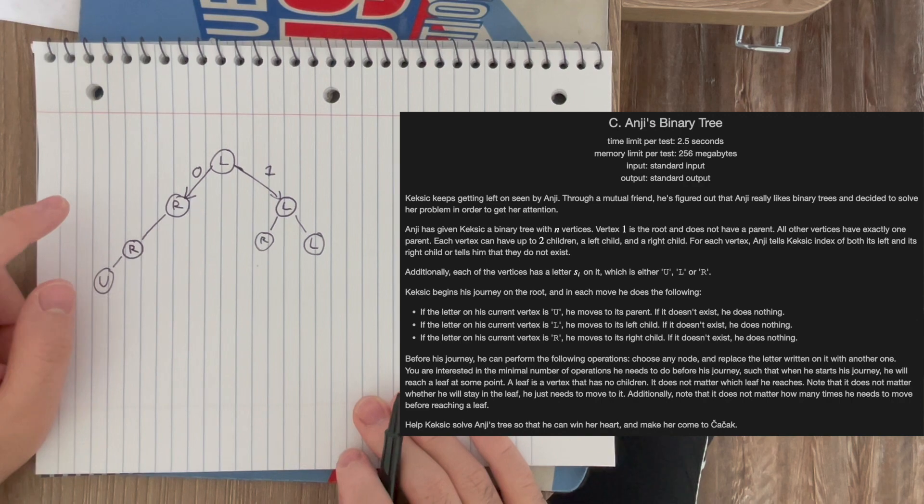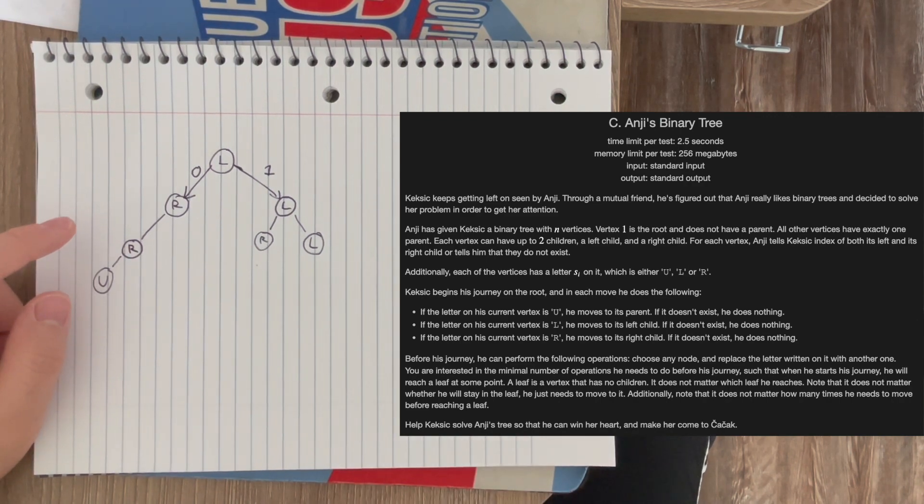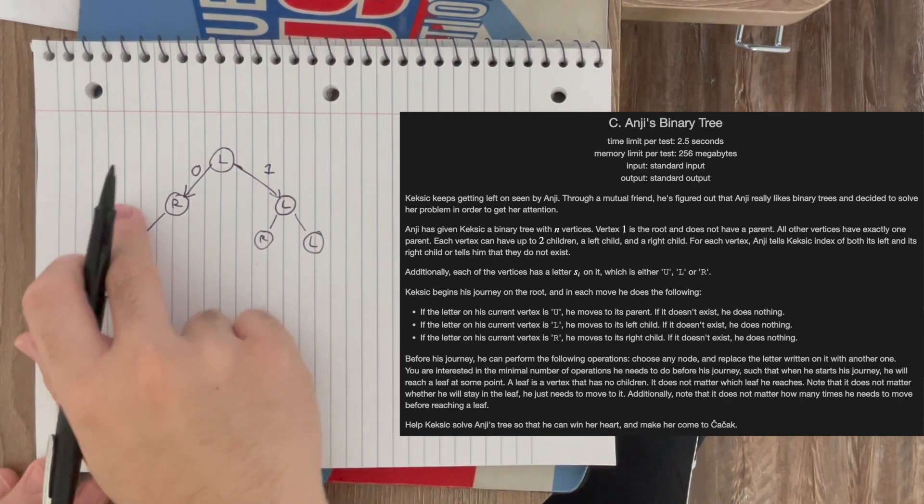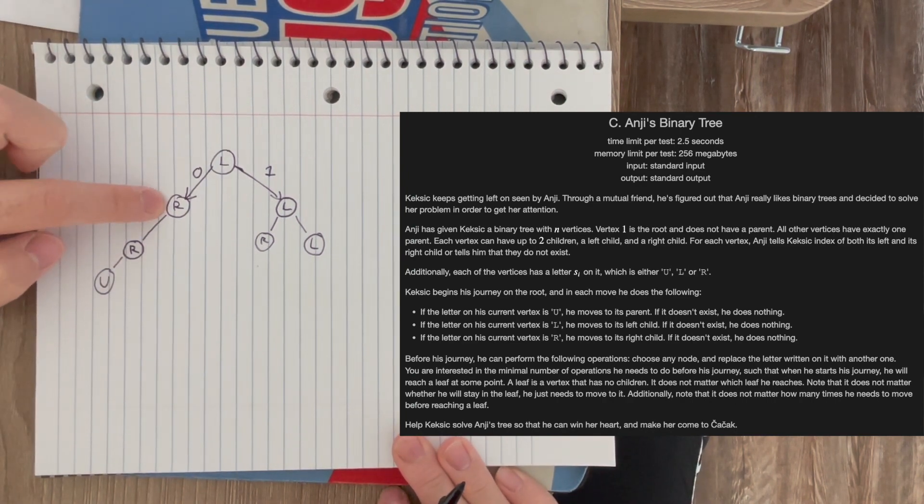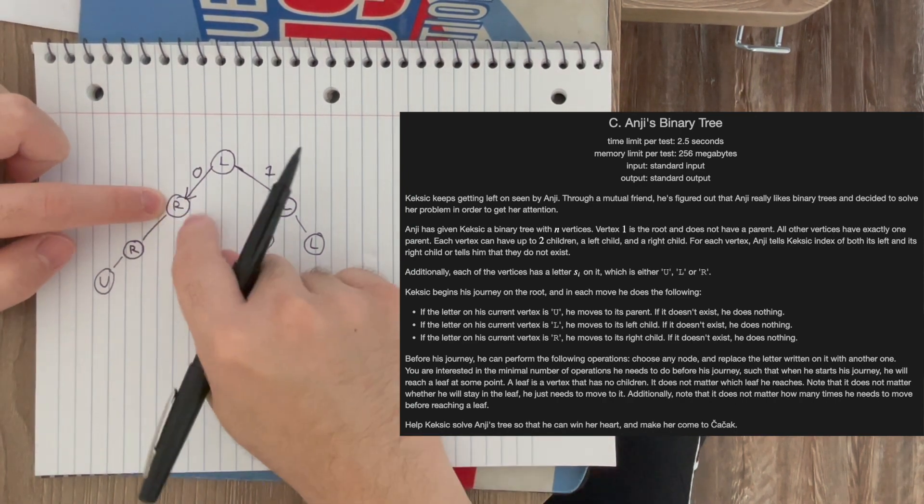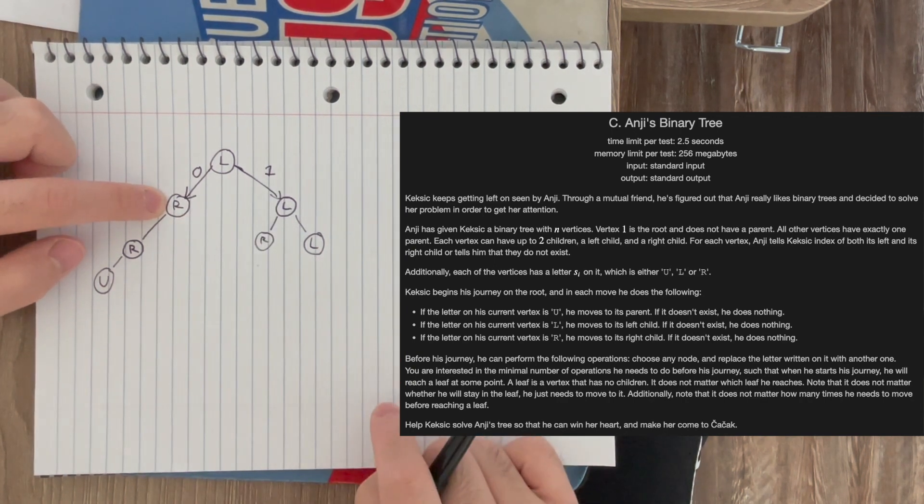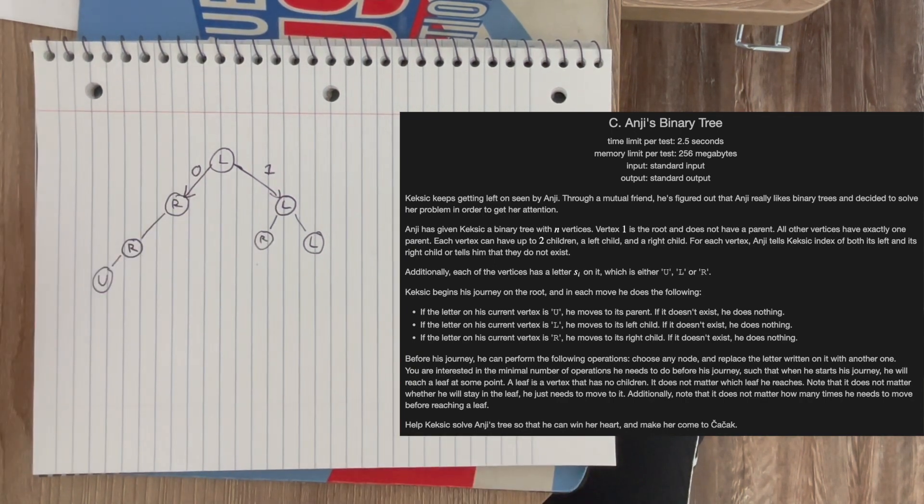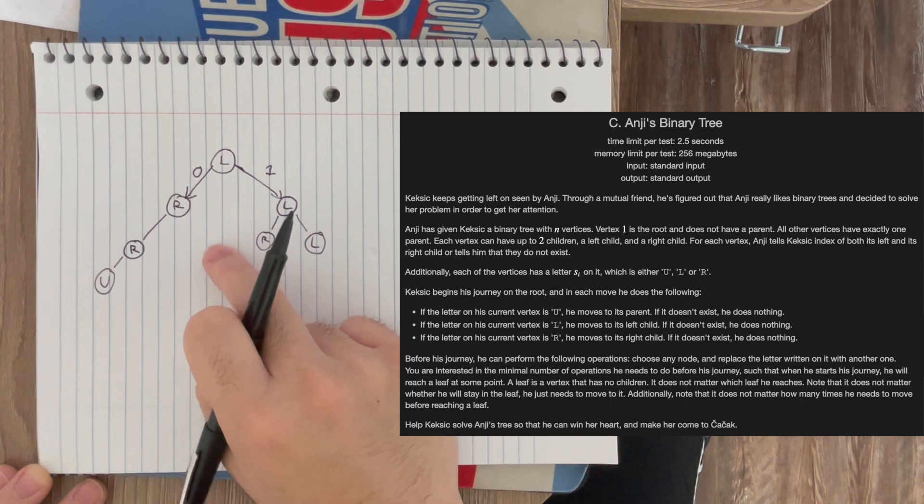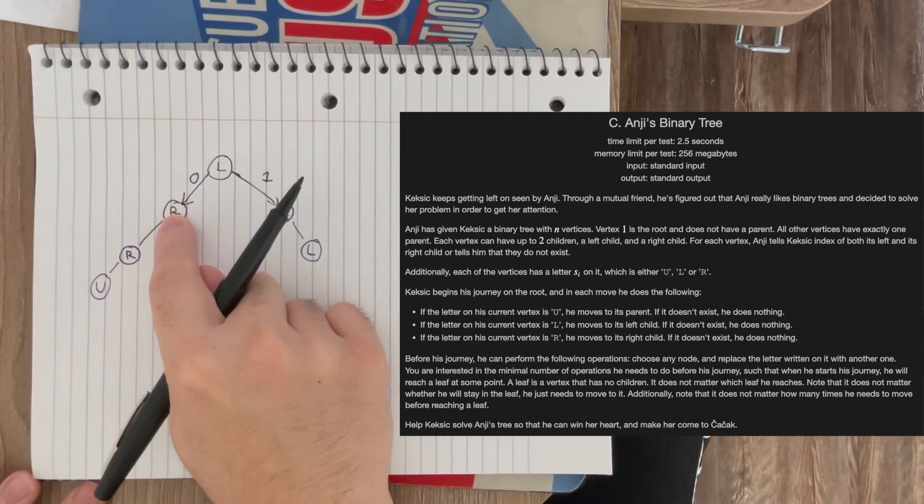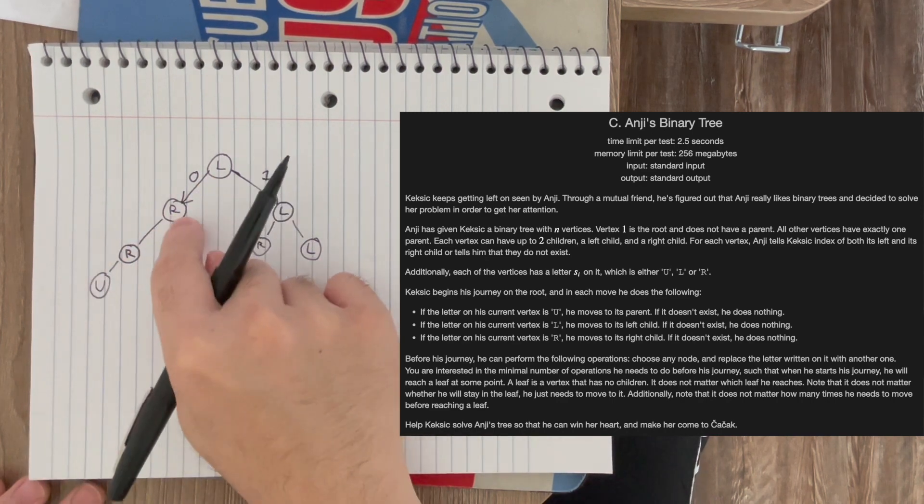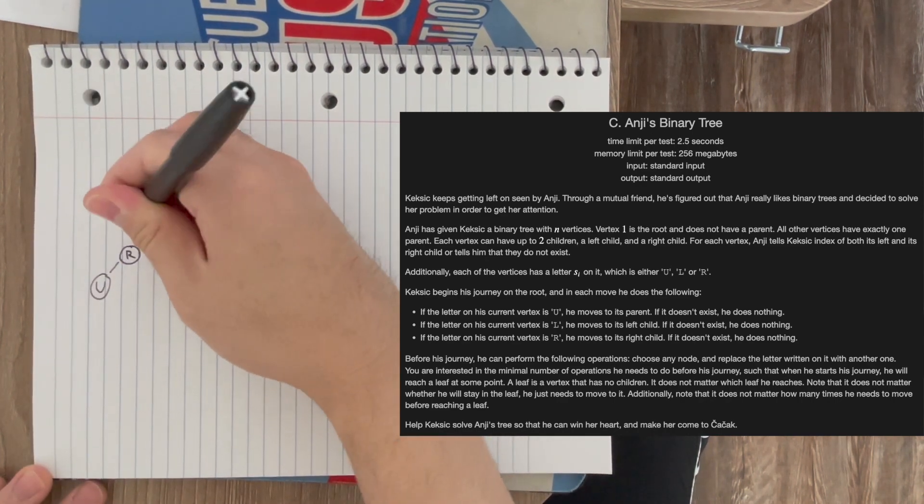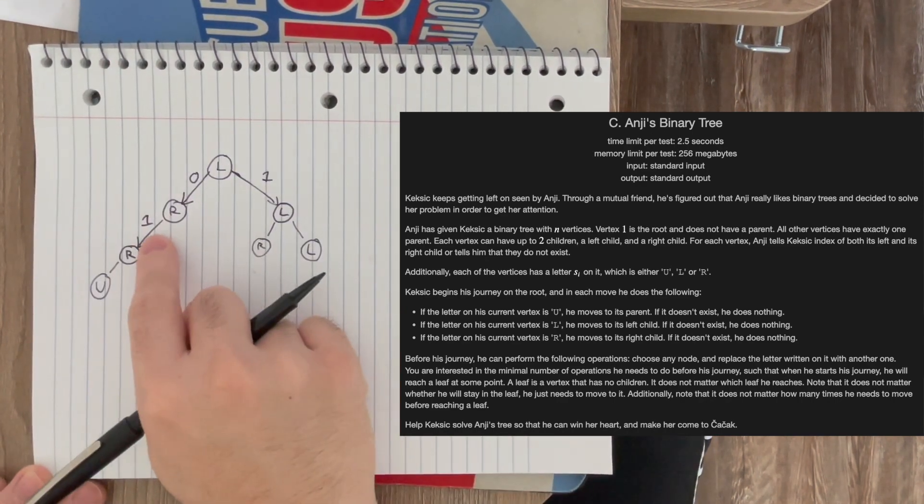And we can construct these edges in a very similar fashion for all of these nodes. So for example, if we assume we were at this node, the default trajectory would be we would go to the right child, which doesn't exist, so we don't draw any edge for that. But if we were to go to the left child, then we would have to change this label to L, and so that would incur a cost of 1, so we draw an edge of weight 1.